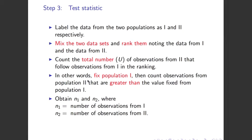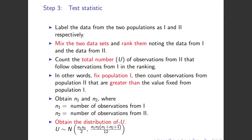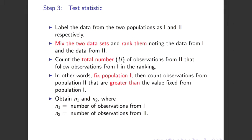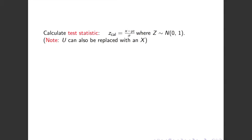Then obtain N1, the number of observations from population one, and N2 from population two. Remember these won't be the same because they are independent samples. Next, obtain the distribution of U: U is normally distributed with mean N1*N2/2 and variance as given by the formula. Then calculate the test statistic Z = (U - mu) / sigma, where Z is standard normal with mean zero and variance one.